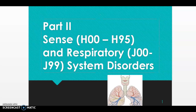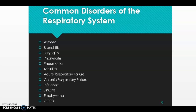Hello everyone, and welcome back to part 2 of our ICD-10-CM coding for the senses conditions as well as respiratory system disorders. In this video we are going to cover how to code some different respiratory system conditions. Common disorders you'll see as a coder are asthma, bronchitis, laryngitis, pharyngitis, pneumonia, tonsillitis, both acute and chronic respiratory failure, influenza, sinusitis, emphysema, and COPD — chronic obstructive pulmonary disease.